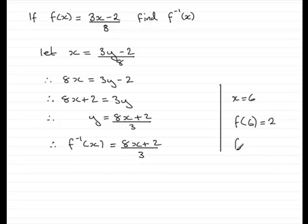Now if I do f to the minus 1 of 2, what do I get back? Well we have 8 times 2 is 16, 16 plus 2 is 18 and 18 divided by 3 is 6. So you can see that I've been able to verify that this works.